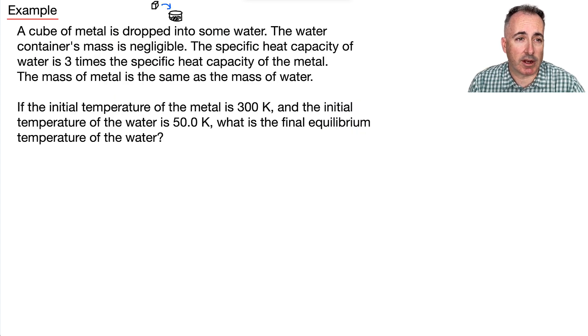Okay, so let's look at an example. We have a cube of metal, and it's dropped into some water. The good news is we don't care about the water container's mass. We just care about the water itself. Now, we're told that the specific heat capacity of the water is three times the specific heat capacity of the metal. So right away, I can write an equation: Cw equals three Cm. We know the mass of the metal is the same as the mass of the water. It tells the initial temperature of the metal is 300 Kelvin. The initial temperature of the water is 50 degrees Kelvin. What is the final equilibrium temperature of the water?